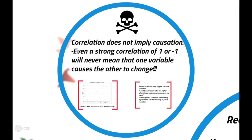The last two things to cover for the lesson. A skull-and-crossbones warning: stay away from believing that correlation means causation. Correlation or association does not imply causation. Even if the correlation is strong — positive 1 or negative 1 — it does not mean that one variable causes the other one to change. You can see some pretty ridiculous examples of this online.